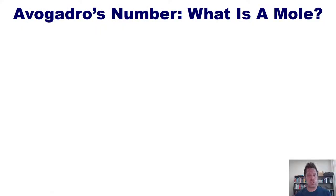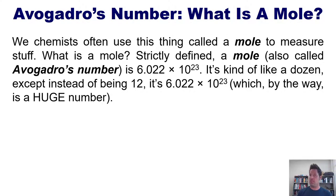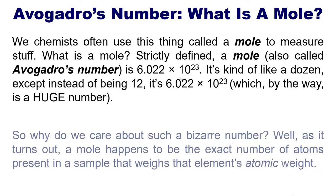Now I'm going to teach you about Avogadro's number. What in the world is a mole? We chemists often use this thing called a mole to measure stuff. Strictly defined, a mole, also called Avogadro's number, is 6.022 times 10 to the 23rd, which I recommend you memorize. It's kind of like a dozen, except instead of being 12, it's 6.022 times 10 to the 23rd, which by the way is a huge number. Why would we care about such a bizarre number?